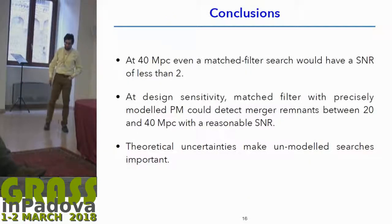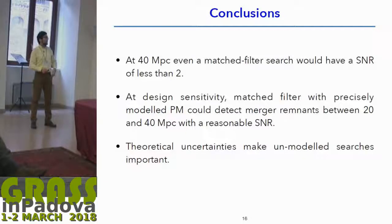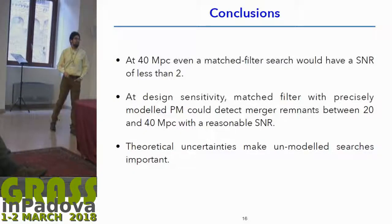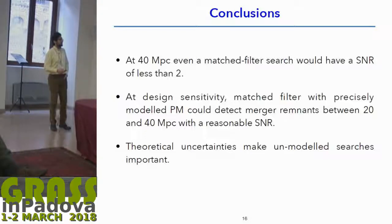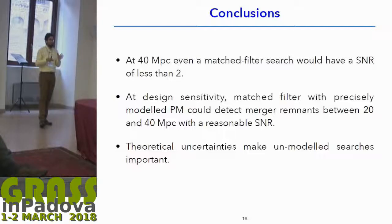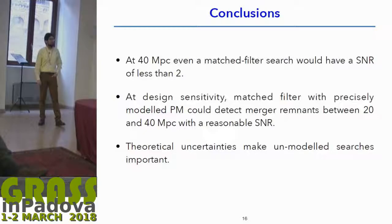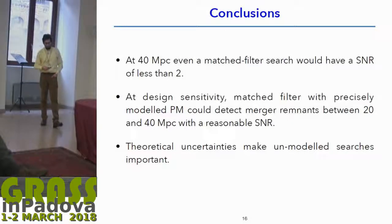To summarize: with current sensitivities, at 40 megaparsecs — the distance at which GW170817 occurred — even a very lucky matched-filter search would have an SNR of less than 2. At the same sensitivity for the advanced detectors, a lucky matched-filter search would be able to detect a post-merger signal between 20 and 40 megaparsecs. A "lucky" matched-filter search means one that has a waveform for the post-merger exactly matching the parameters of the observed signal. Given the theoretical uncertainties of these kinds of signals, unmodeled searches are very important for constraining neutron star equation of states.